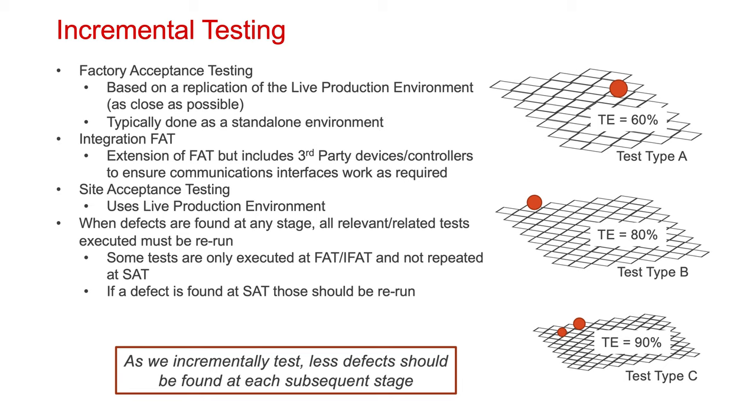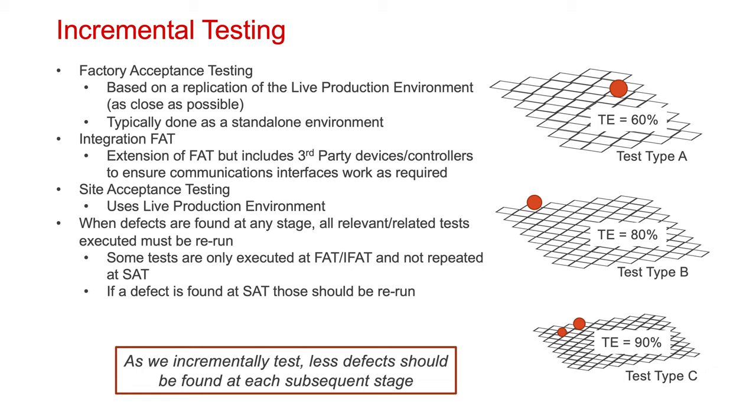The mapping of the data points, the polarity, and the data formats are very important to make sure that they match, align, and are tested thoroughly. A site acceptance test is ultimately the end goal, whereby you are at site — sometimes perhaps not physically — but your implementation has been put onto the real-world system, at which point you are using your live production environment. Whenever defects are found at any stage, all the relevant and related tests need to be re-run and re-executed, because we don't know that the fix applied hasn't detrimentally impacted other associated logic or components. This applies at the FAT and integration FAT stage as much as at the SAT stage. If we're doing our tests thoroughly as we incrementally test during the engineering design process, there should be fewer defects found at each subsequent stage. If there are more defects being found, I'd suggest a problem with test effectiveness and test coverage.